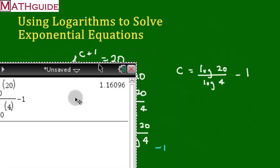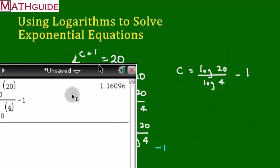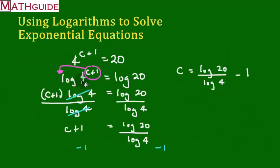I'm going to get this off the screen because it's blocking me from all the work, but I wanted you to see that. So it's 1.16. C is approximately 1.16 to the nearest hundredth, and there you go.